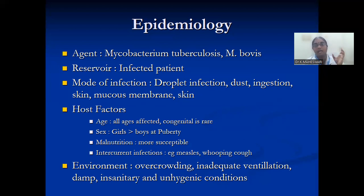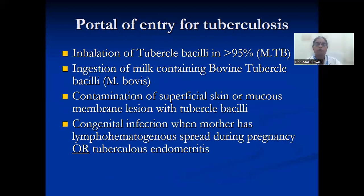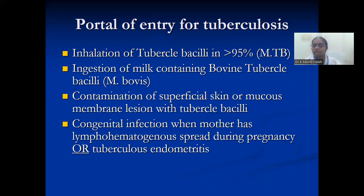The agents to remember are Mycobacterium tuberculosis and Mycobacterium bovis. Mode of infection is usually droplet, sometimes ingestion or direct contact via the skin. Portal of entry of tuberculosis: inhalation is the most common, making the lung the primary organ affected in more than 90% of disease. Ingestion of unpasteurized milk can cause bovine tuberculosis. Contamination of superficial skin with tubercle bacilli can also occur. Congenital infection happens when the mother has lymphohematogenous spread during pregnancy or through tuberculosis endometritis — it can spread through the placenta or the infected uterus.